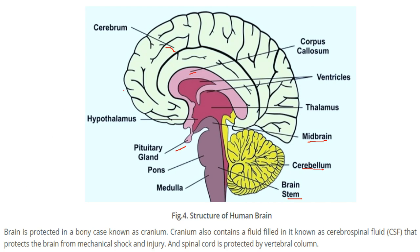The brain is protected by a bony case called the cranium. The cranium also contains a fluid called cerebrospinal fluid, which protects the brain from minor mechanical shocks or injury. The spinal cord is supported by the vertebral column.